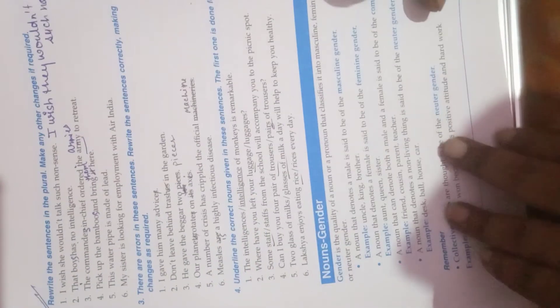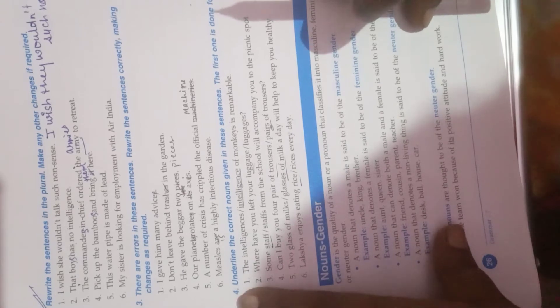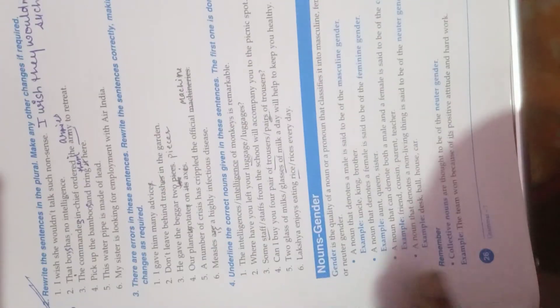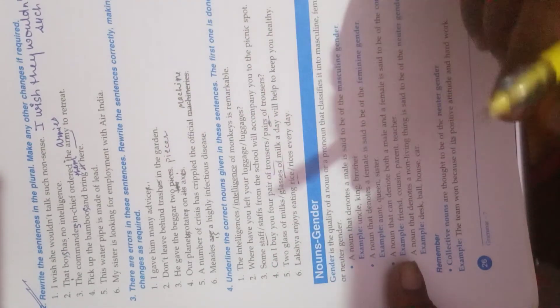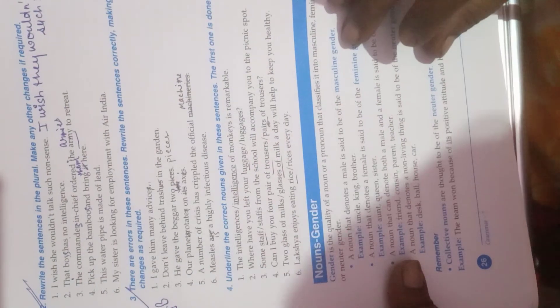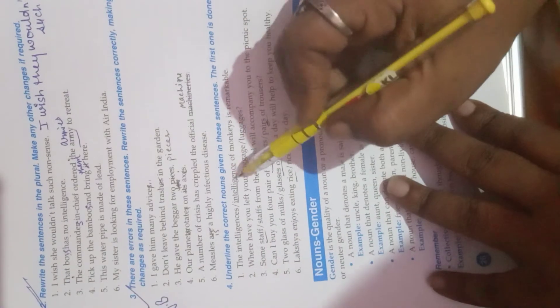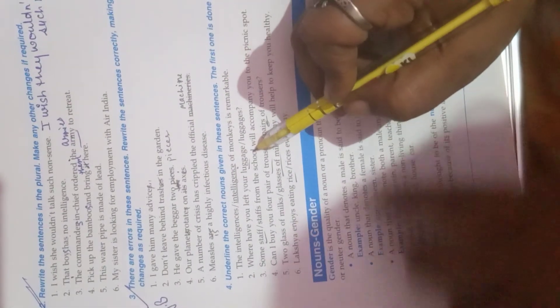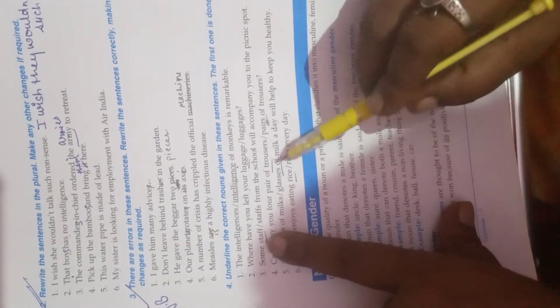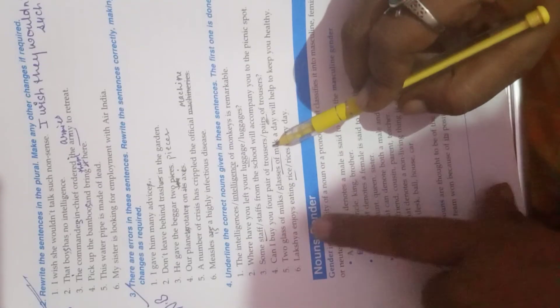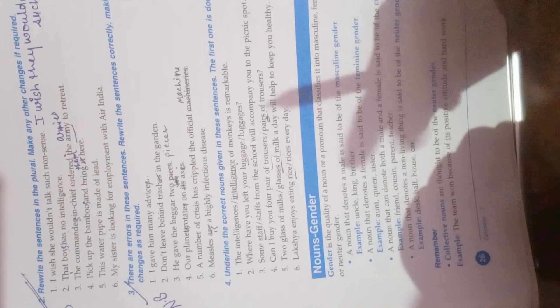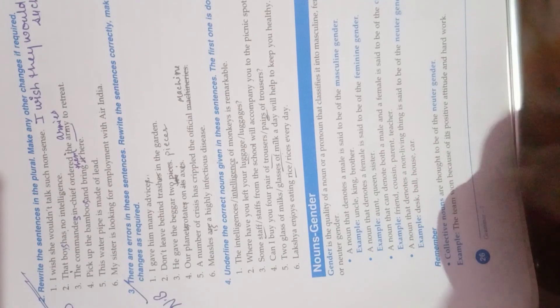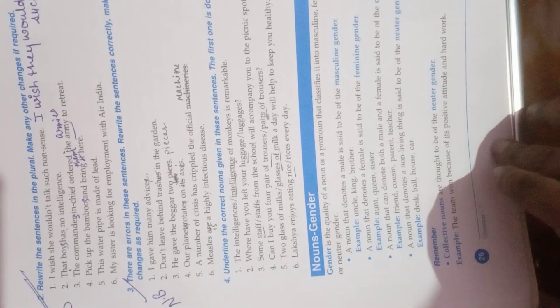You have to do this in the notebook. There are some errors you can see in the video that I have just done some correction over here. Underline the correct noun. First one is intelligence, second is luggage, third is staff, fourth is trousers, fifth is glasses of milk, sixth is rice. I think you have all got the answers and this is all for my this video. Wait and watch for my next video.